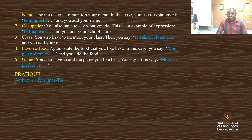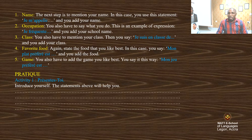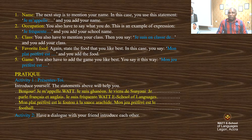Let's practice. Activity one: introduce yourself. The statements above will help you — go through them and introduce yourself. Simple and short; you can add more if you want, such as your age or your class. The next activity: try to write a conversation with a friend and post it so I can help you correct the mistakes.